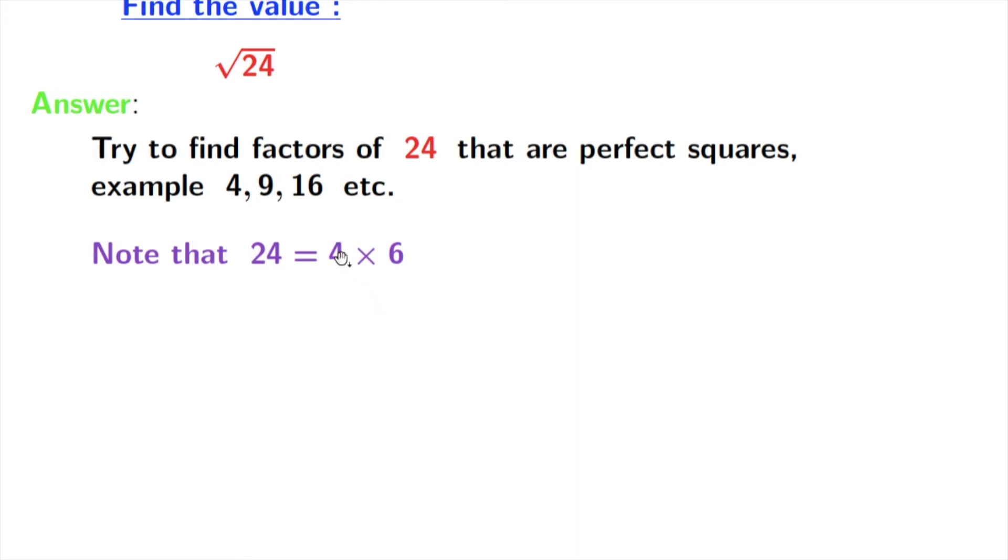Now we will take square root on both sides and we will write it as square root of 24 is equal to square root of 4 times 6.